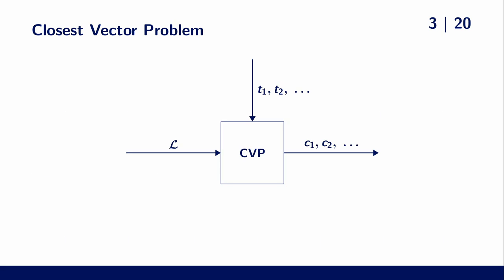One way to look at a CVP algorithm is as a black box that receives a lattice basis and a target and outputs a closest lattice point to this target. This is repeated for each target separately.